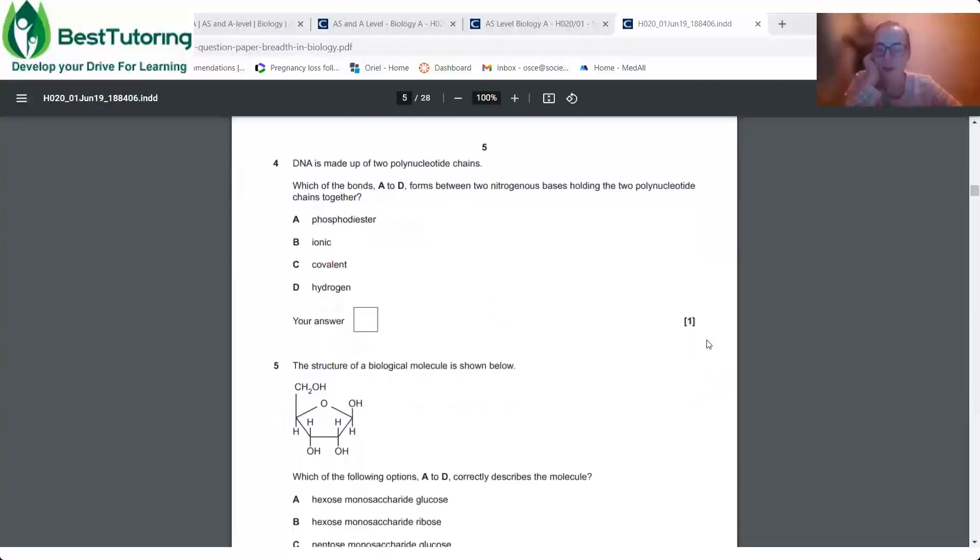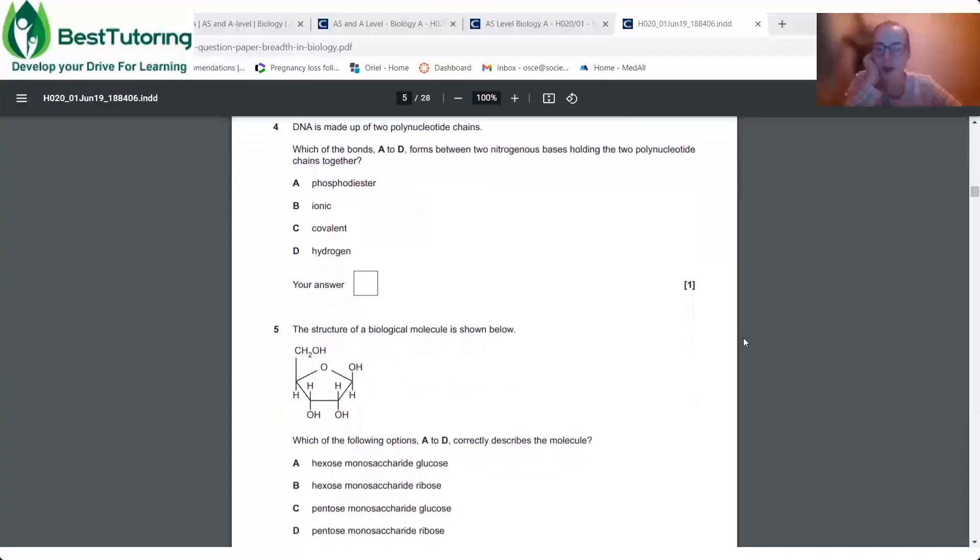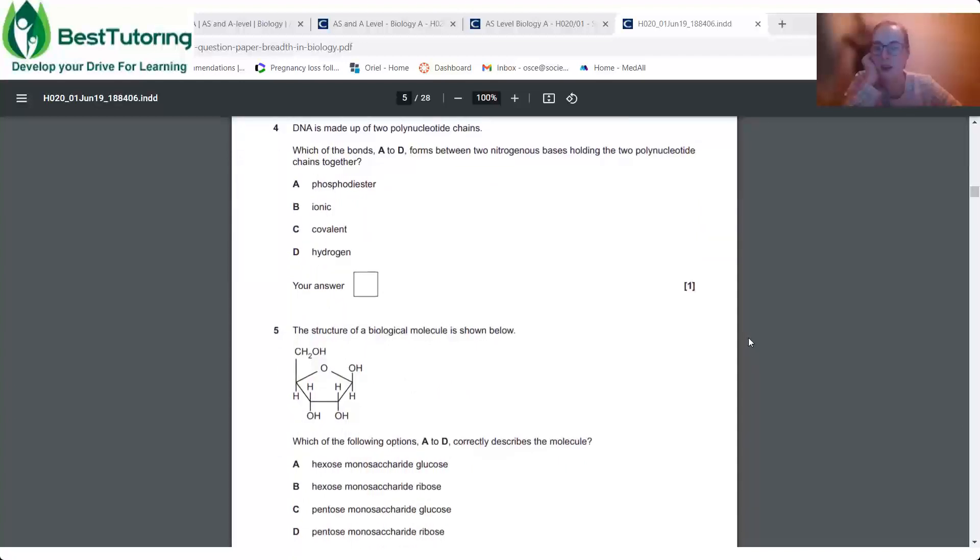So a few short ones here about DNA. So we've done about this. Okay. So I think these are some quite clever questions make you think. So DNA is made up of two polynucleotide chains. Okay. So which of the bonds A to D forms between two nitrogenous bases holding the two polynucleotide chains together? So have a think.